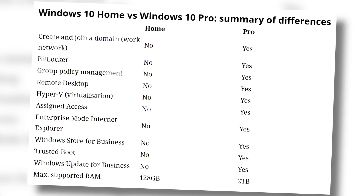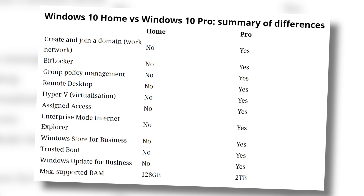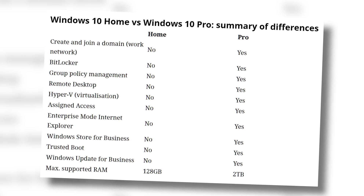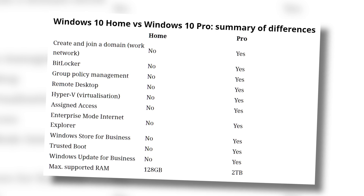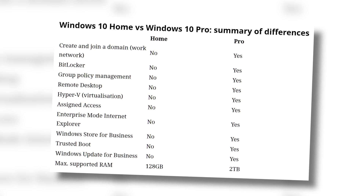Though, again, I was able to enable Hyper-V in my BIOS on Windows 10 Home, so I'm not sure what's going on with that differentiation. The Pro version also has Enterprise Mode Internet Explorer — LOL — use Windows Store for Business, set up secure trusted boot modes, use wide deployment Windows Updates for Business, and then use more than 128GB of RAM, up to 2TB, which is only going to be a high-end server thing for a long time.